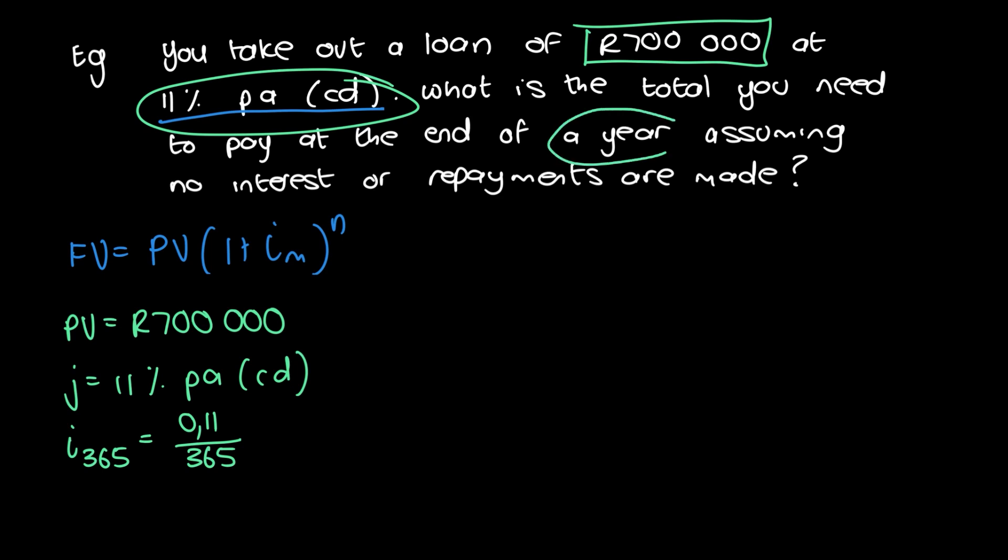So we're looking at the duration of a year, so we have n equals one year. And as always, we're going to check that the units correspond for our formulas. So n is one year, and this is 365, so they're different at the moment. So we need to change n to days. So that is just going to be 1 times 365, which is going to give us 365 days.